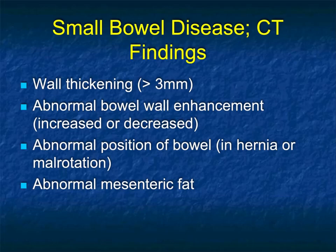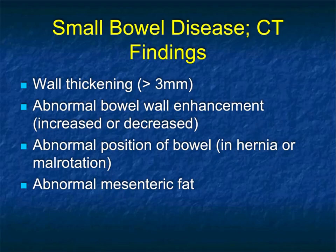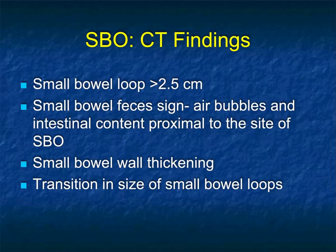In terms of findings, we look at the bowel itself. Wall thickening over three millimeters is concerning. Abnormal enhancement — areas of decreased or increased enhancement. With ischemia early on it could be increased enhancement, and later on decreased enhancement. Is the bowel in an abnormal position? Is there a hernia? Is there malrotation? The mesenteric fat is a good sign — with Crohn's you see fibro-fatty proliferation, but with ischemic bowel you can see engorgement of the mesentery. We also look at the size of small bowel loops — over 2.5 cm is considered dilated — and we look for the feces sign, which are air bubbles and intestinal content proximal to the site of obstruction.